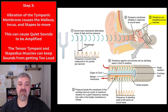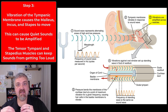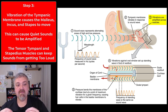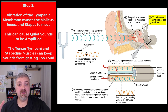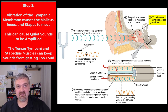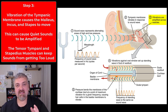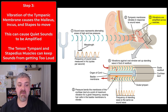Step three: vibrations are amplified across the ossicles. The movement of the tympanic membrane causes the malleus, incus, and stapes — the middle ear bones, or auditory ossicles — to vibrate. This allows soft sounds to be amplified by these levers. But if a sound is really loud but not too rapid, the tensor tympani and stapedius muscles can reflexively contract and minimize the vibration. So the auditory ossicles both amplify sound and quiet noises that are too loud, as long as they have time to respond.